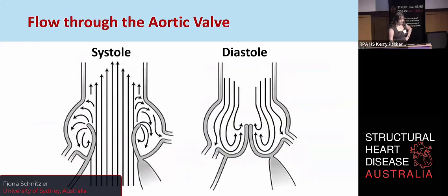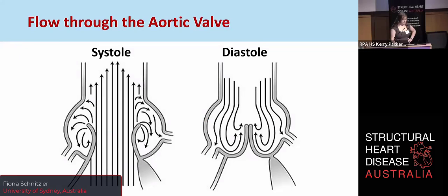Flow through the aortic valve occurs during systole, and this flow is laminar. The sinuses of Valsalva are particularly relevant for a few reasons. First, they maintain pressure by vortices that occur — little spirals of blood in these sinuses — pressurizing them to avoid a vacuum, which would disrupt laminar flow. The vortices also continue during diastole and create a negative pressure that aids in closure of the valve at the end of systole and maintains closure during diastole. This pressure also sends some blood down the right and left coronary arteries.